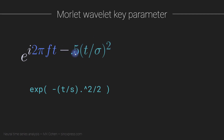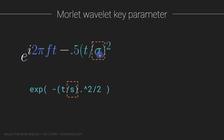Here is the Gaussian part: e to the minus t squared over sigma squared divided by 2. What you see here is the Gaussian written out in code. The key parameter I'm illustrating is sigma, or what I often call s in the code.